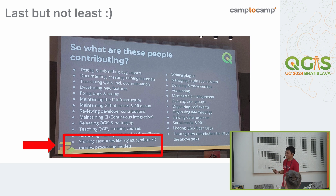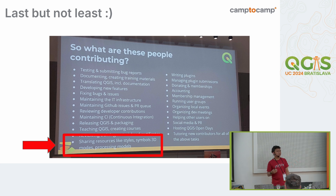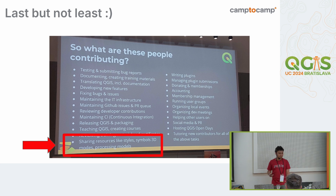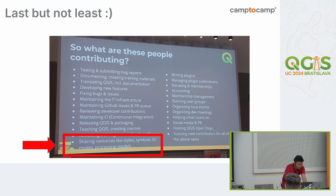Last but not least — I took this slide from Anita this morning — one of the ways to contribute to QGIS is sharing resources, like 3D symbols, processing models, and styles. These are quite commonly reusable in other projects. I think that's enough, but maybe I can do something more to fill the time.